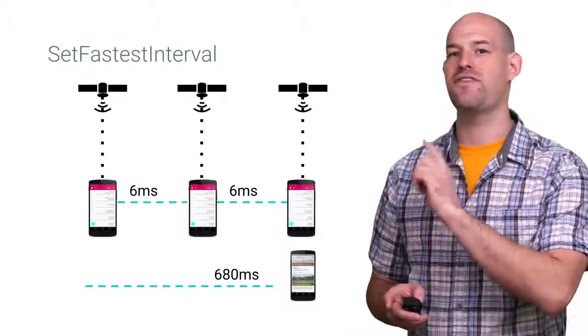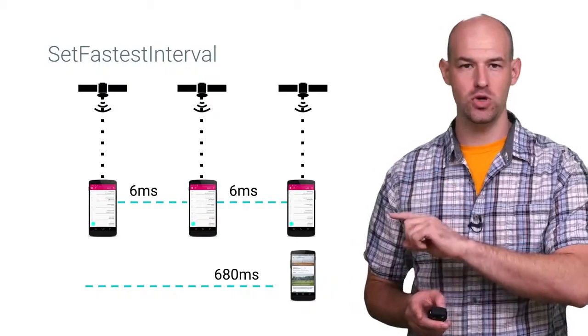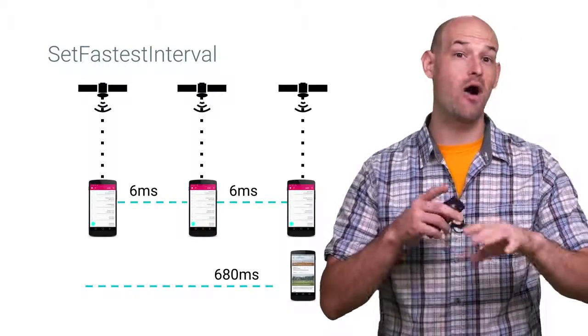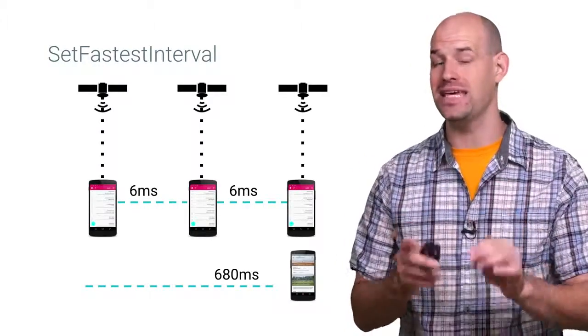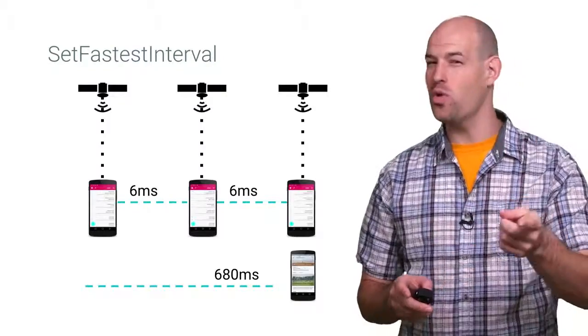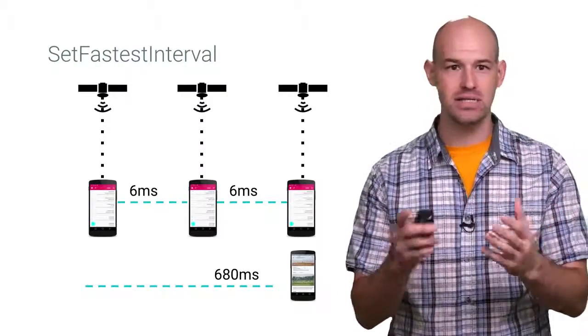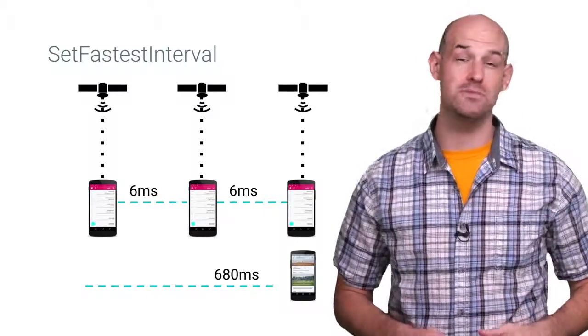Which is why the SetFastestInterval API is used. Basically, this lets you throttle how often you get updates that you might not be interested in or ready for. So your app isn't wasting time updating and processing location events when they're not actually being needed.